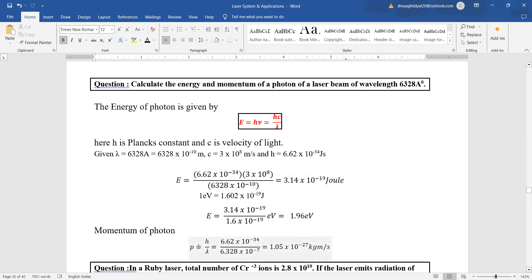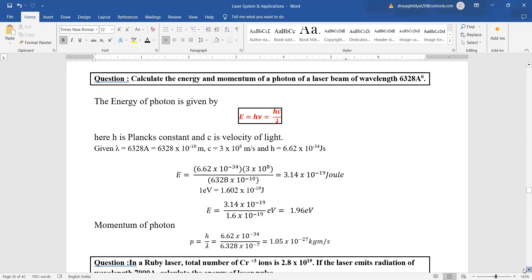And from the De Broglie formula, we know that momentum is equal to h upon lambda. So we will put the values and we will get the answer.